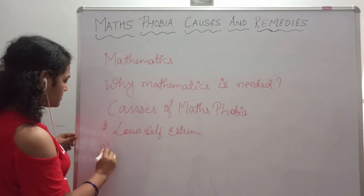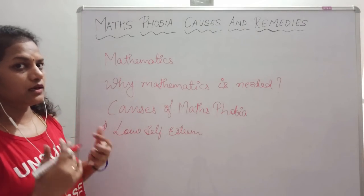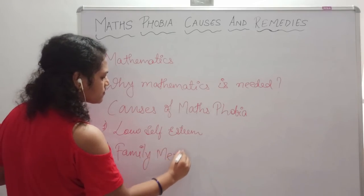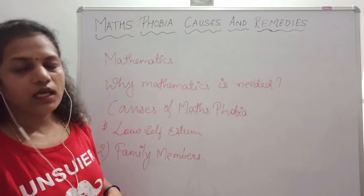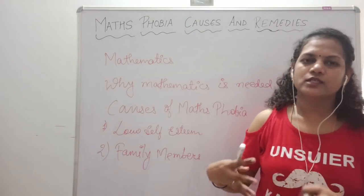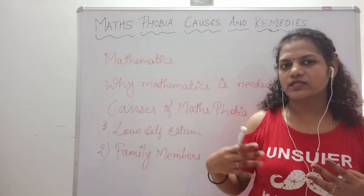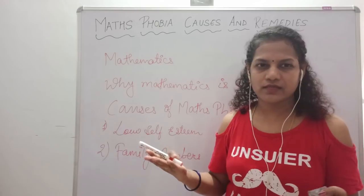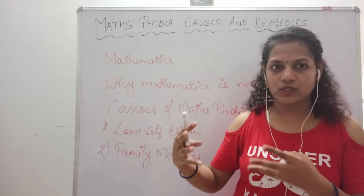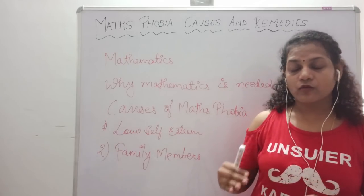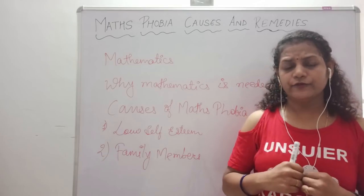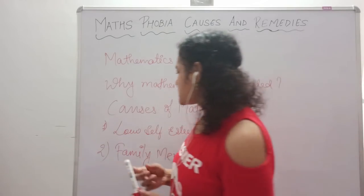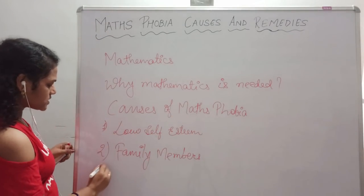The next cause is inherited traits — that is, influence from family members. Suppose someone in your family hates the maths subject. Even if you are good at maths, they may not encourage you or may say something negative about it. Friends, avoid that. If you want to be good at maths, you should avoid this negative family influence. Another related cause is low society influence.